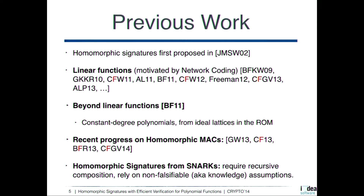Finally, it is possible to construct homomorphic signatures using succinct non-interactive arguments of knowledge. However, if you want a fully-fledged homomorphic signature, this requires less natural properties such as recursive composition of SNARKs, and due to some impossibility results in the area, you are likely to end up using non-falsifiable assumptions.